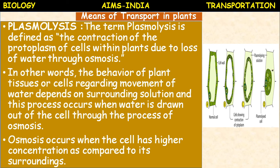The reverse of plasmolysis is called deplasmolysis. The swelling of the plasmolyzed protoplast under the influence of hypotonic solution is called deplasmolysis. It is possible only immediately after plasmolysis and shows endosmosis. If cell shrinkage continues the cell may die, so immediately endosmosis takes place to recover and deplasmolysis occurs.